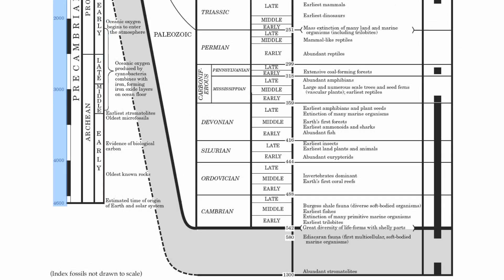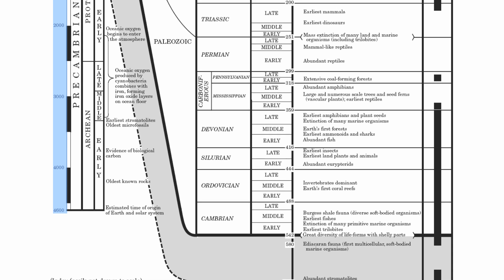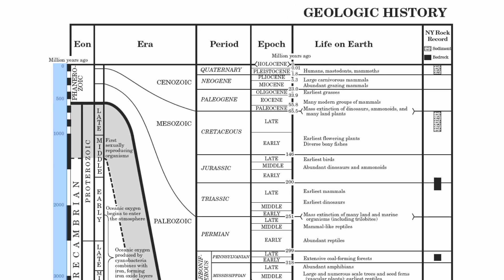If we start out at the very bottom — because you read these charts from bottom to top — the number 4,600 is actually in millions of years. So 4,600 million years is 4.6 billion. 4,000 million years is 4 billion, then 3 billion, 2 billion, until you go all the way to the top of the chart, which is current time.